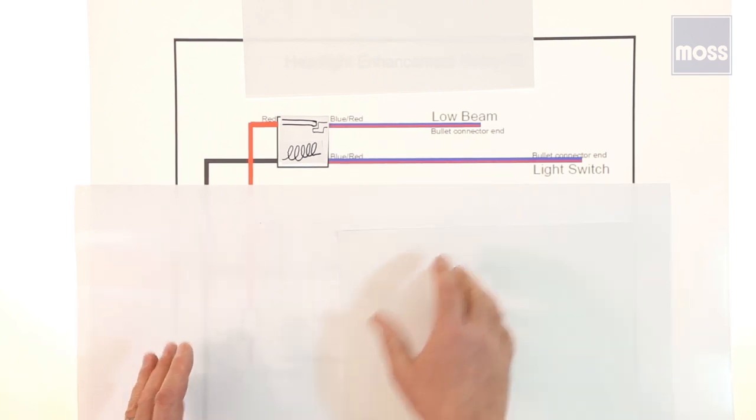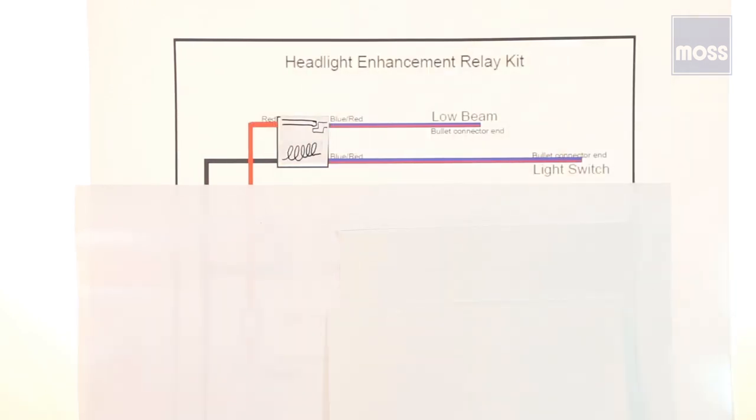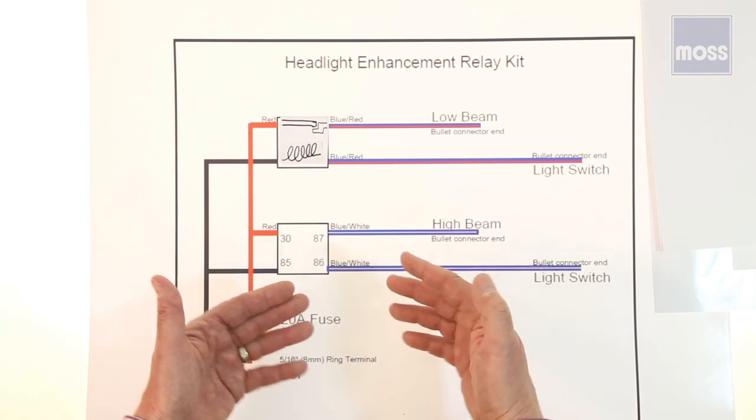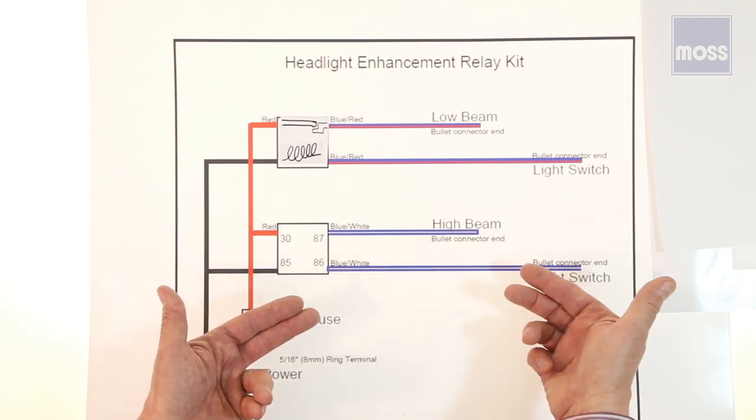If we understand how that works, this whole thing becomes a whole lot easier. We can take a look now and say, there's the low beam circuit right there, and this other part is the exact same thing, but it's for the high beams.